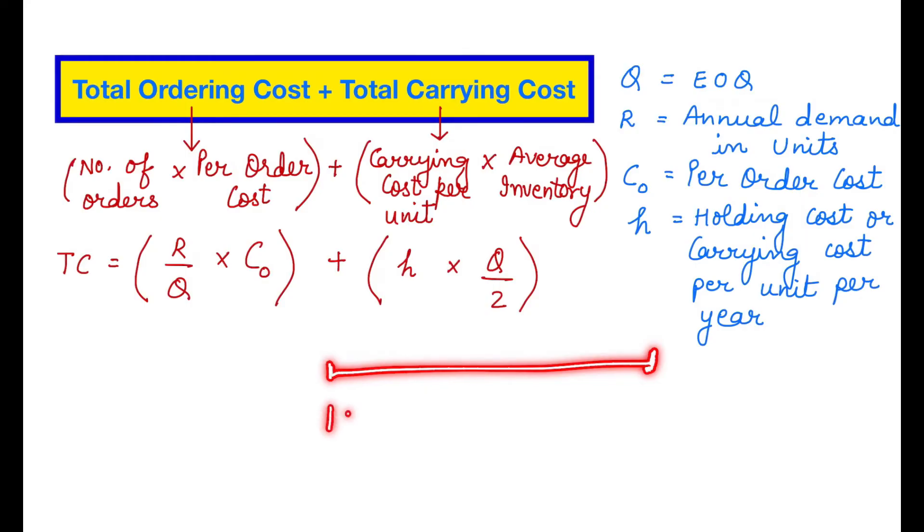Now suppose if we order 1000 units at one time, so maximum 1000 units can be there in the godown and minimum it can go down to 0 units. So how much should we take? That is why we are taking the average inventory. We are just taking the average, that is 1000 plus 0 divided by 2. Since 0 does not hold any value, we are using the formula as 1000 by 2, and therefore Q by 2. So that is the reason we use Q by 2 multiplied by H.